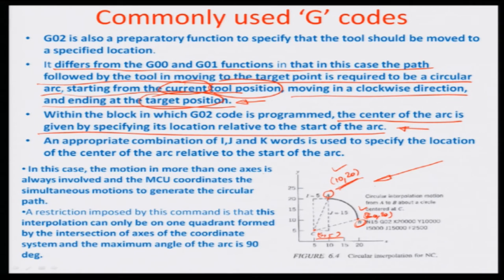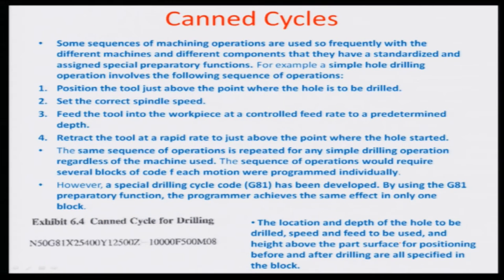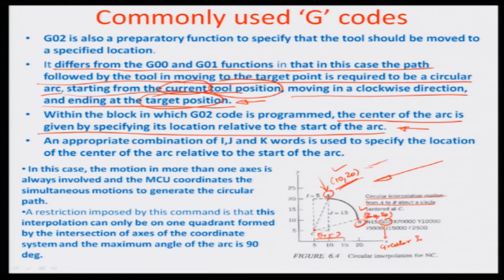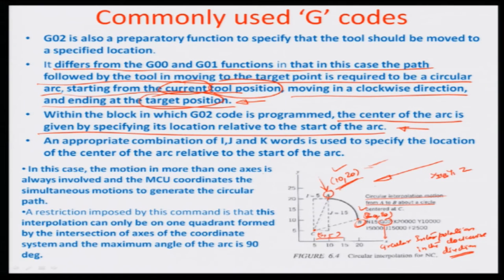The tool has to now start from point C and go all the way to point A. The coordinate of A is something we know of, and from there the circular interpolation starts. G02 mentions circular interpolation in the clockwise direction. The controller is enabled to read values in terms of X, Y, Z with plus/minus 4-3 format, and similarly I, J, K again plus/minus 4-3, which indicates the position of the decimal point within the numeral.